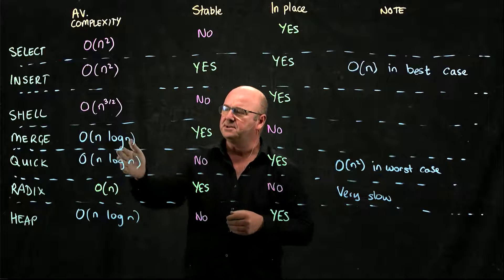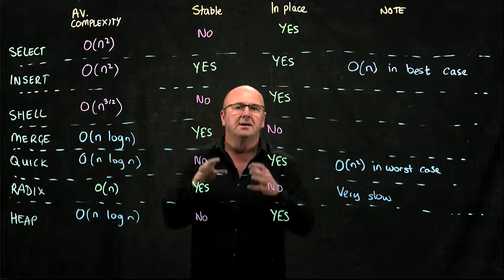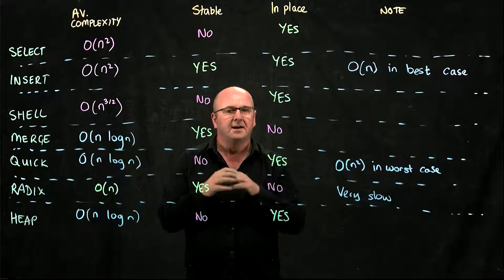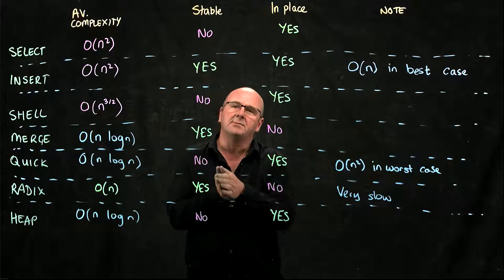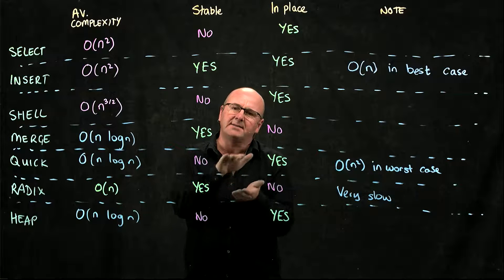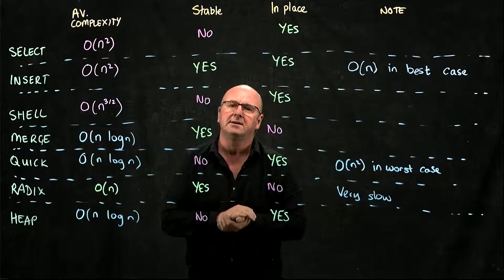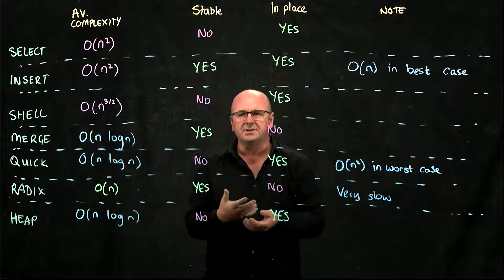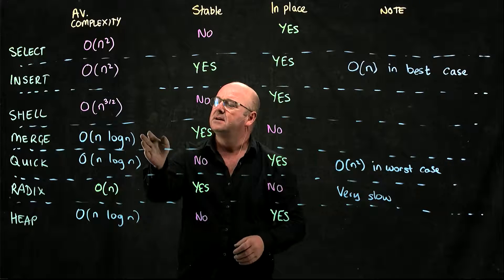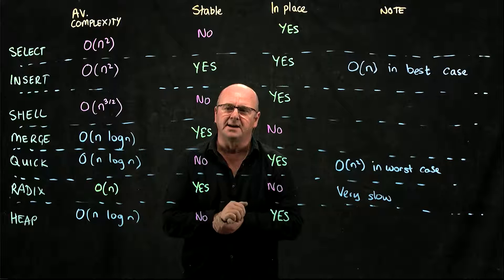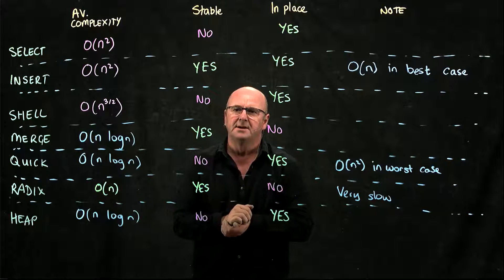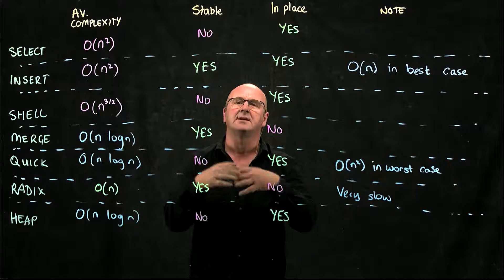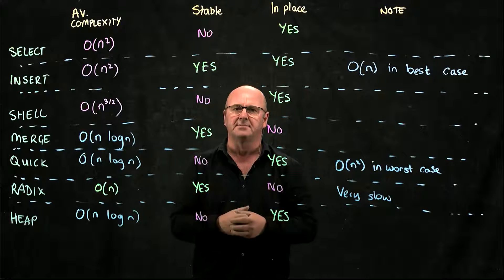We have merge sort, where we divide things in half repeatedly. During that division we don't do any work — it's when we start combining things back together that we actually do the work. Because of the dividing in half, merge sort gives us O(n log n) complexity. Merge sort is stable, but it's not an in-place sort; we need another array to hold all of the elements in the list.